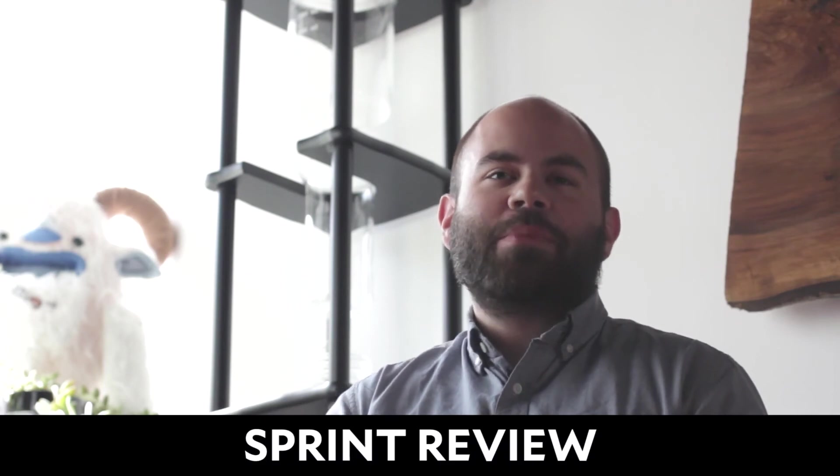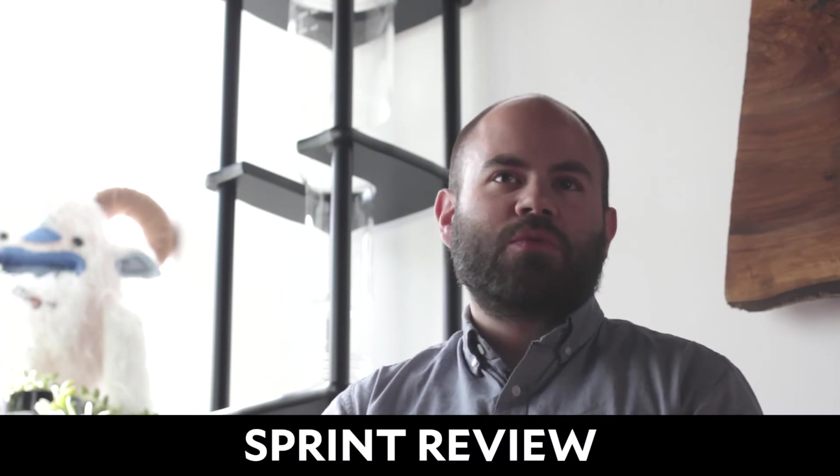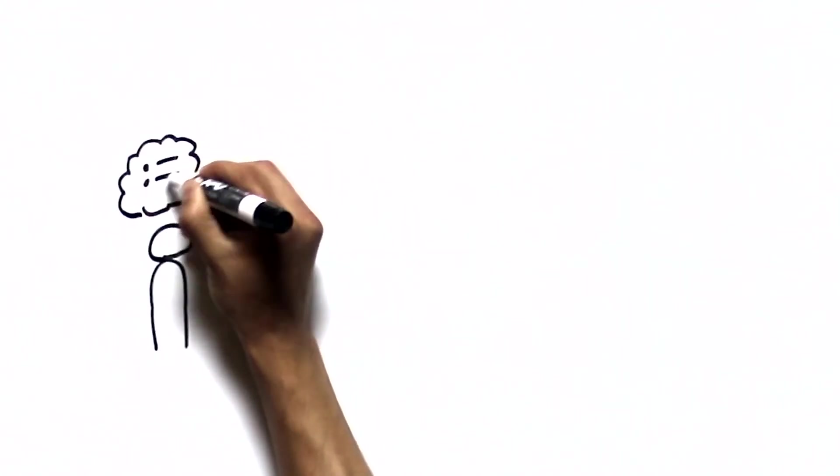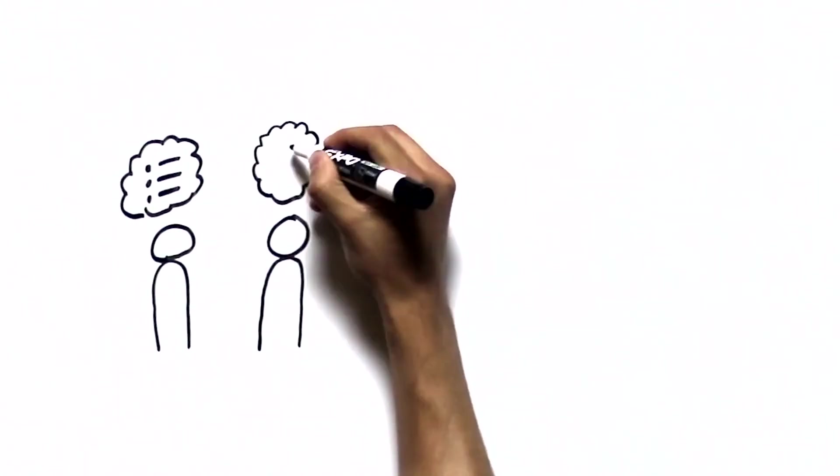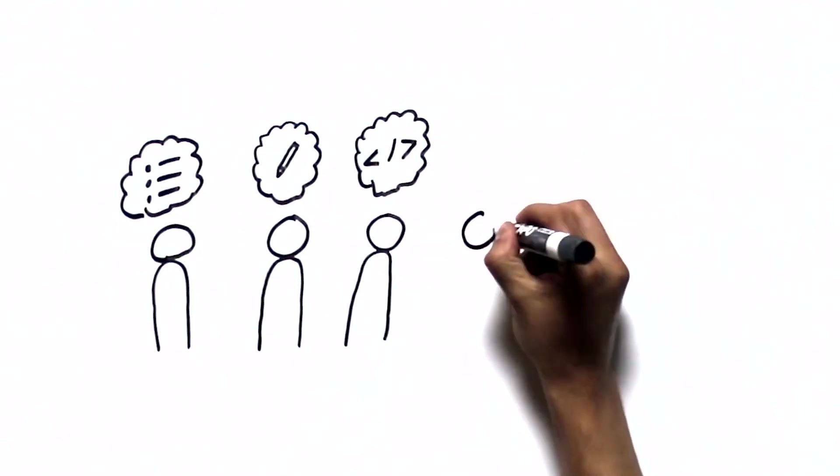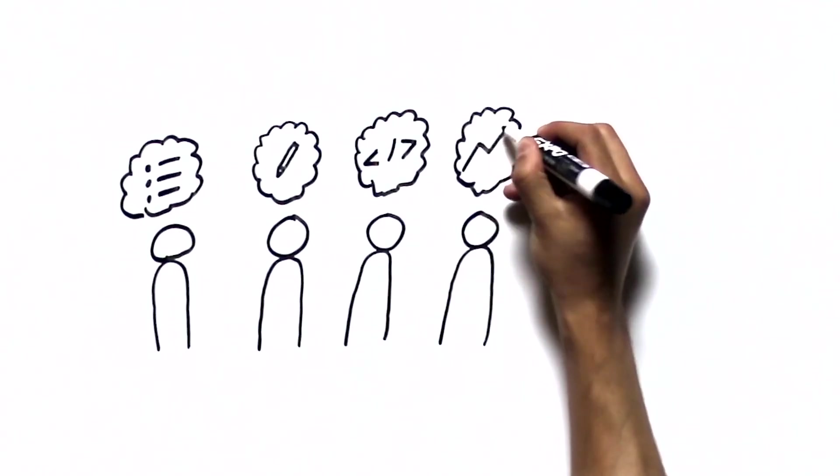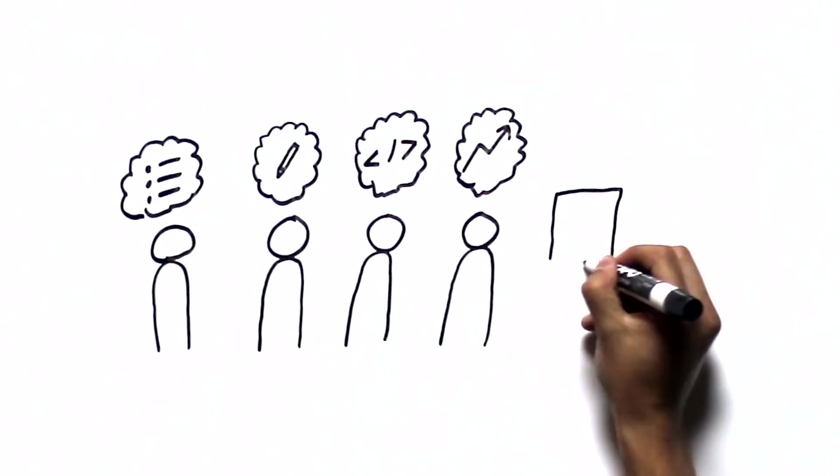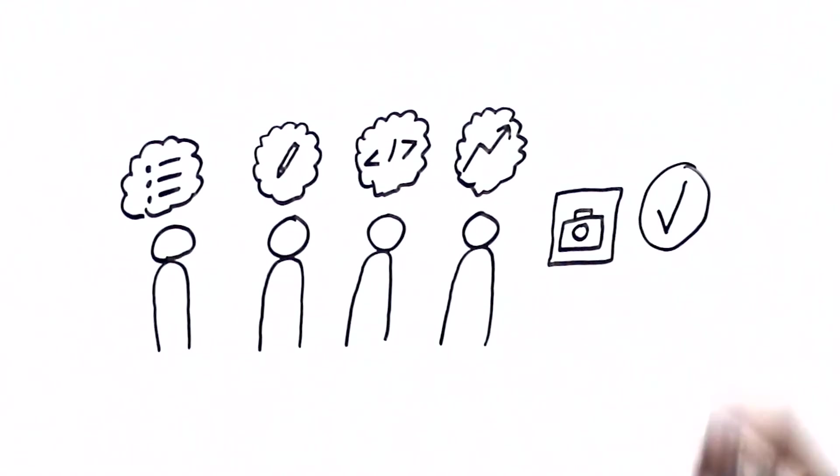A sprint review happens at the end of a sprint, the one, two, or three weeks where the product owner gets together with the people that were working on the product during the sprint, as well as maybe some stakeholders. The user stories for that sprint are reviewed to make sure that they are accepted and pass all of the acceptance criteria.